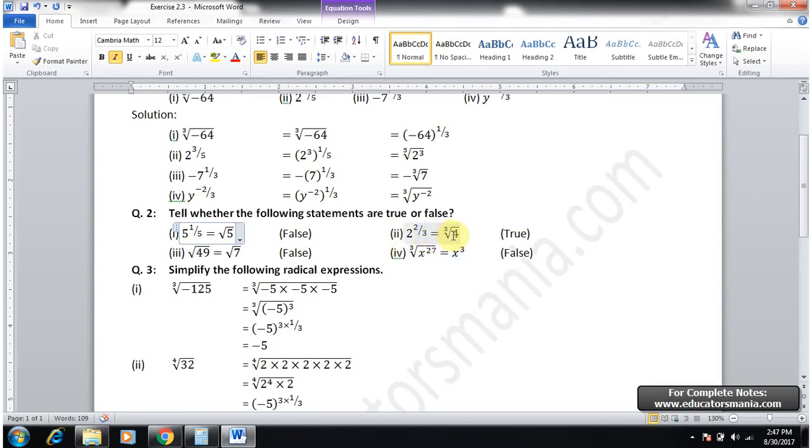Square root 49 equals square root 7, that's false because square root 49 is just 7. Cube root x equals 27, so if we remove the radical sign and put 1 over 3, then cancel, the x is 9 but here x is 3, so false.